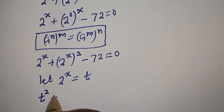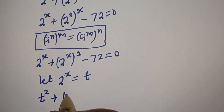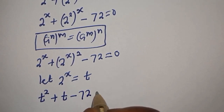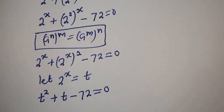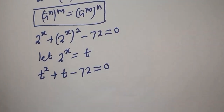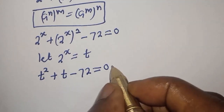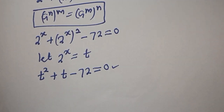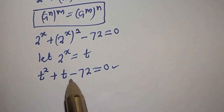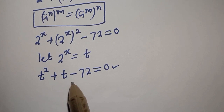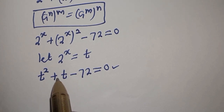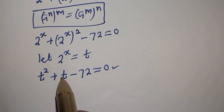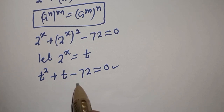T squared plus T minus 72 is equal to 0. If you rearrange this, it is a quadratic equation which can be solved using the factorization method. The product must be equal to minus 72 and the sum must be equal to 1, which is the coefficient of T.